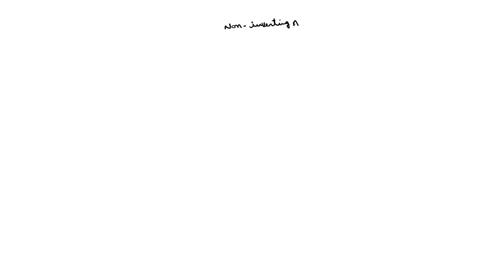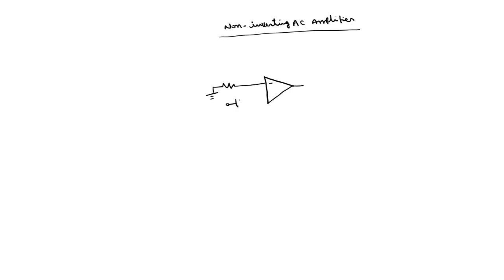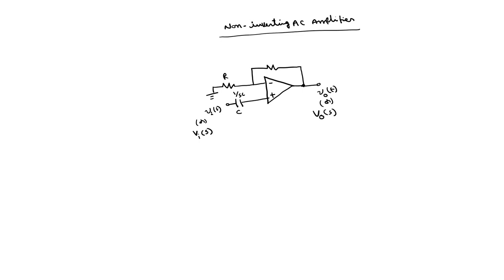Next is the non-inverting AC amplifier. Here, the inverting terminal will be grounded, and the input will be applied to the non-inverting terminal via a capacitance. This capacitance is extra. Vi(t) in the time domain or Vi(S) in the S-domain is the input. In the S-domain, the capacitive reactance is 1/(SC). The output is V0(t) or V0(S), with R1 and Rf in the feedback.